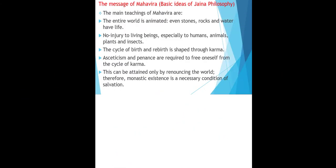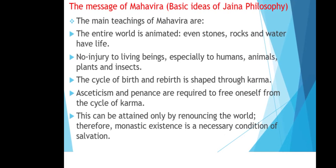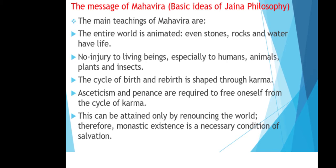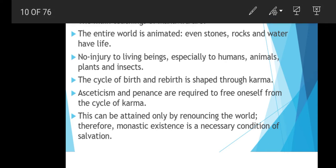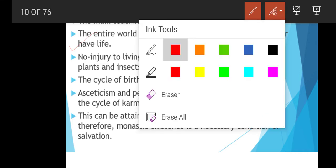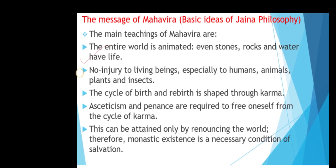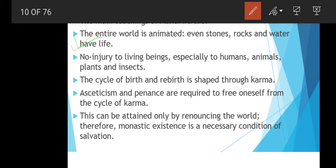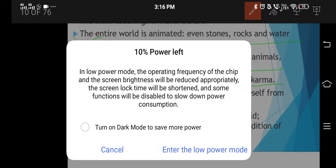Now, what was the message of Lord Mahavira to the masses? The main teachings of Mahavira center on Jain philosophy. First, the entire world is animated — even stones, rocks, and water have life. Second, there should be no injury to living beings, especially humans, animals, plants, and insects. Third, the cycle of birth and rebirth is shaped through karma.